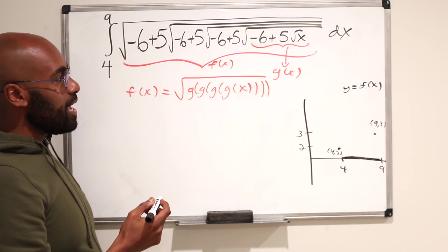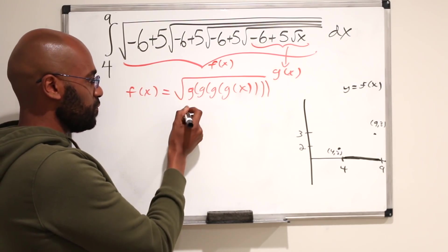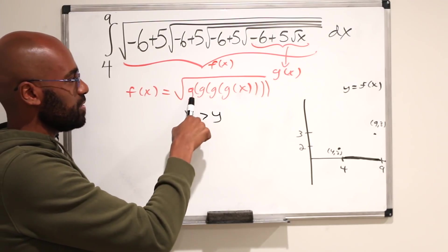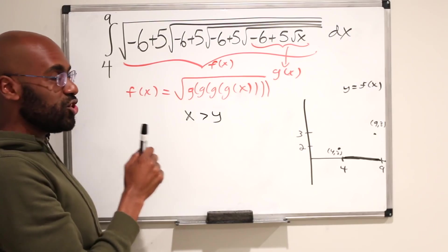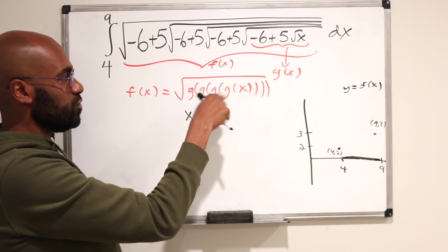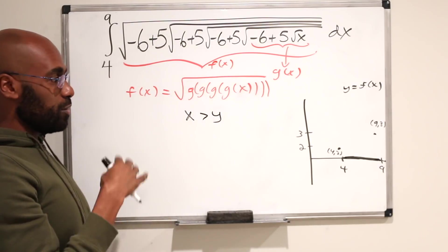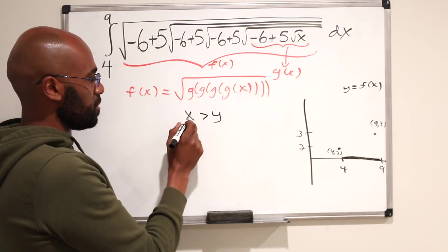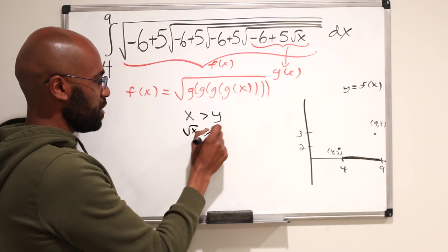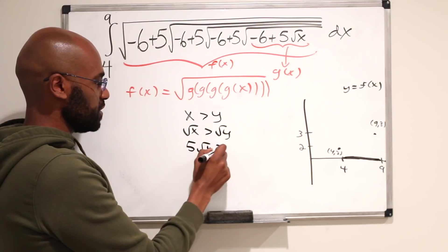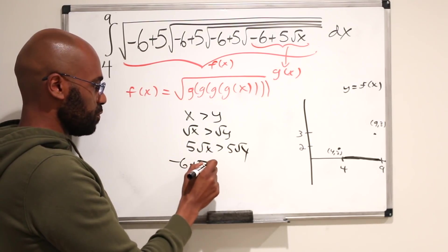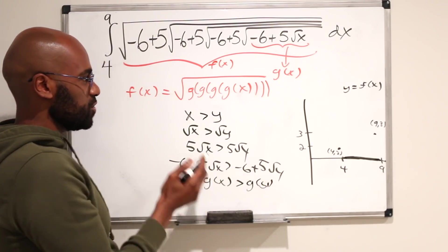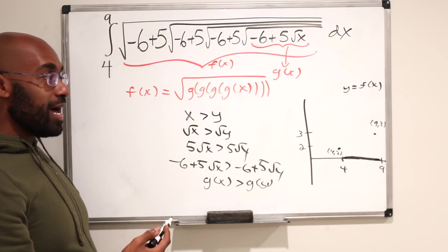Another observation is that f is actually an increasing function — if x is greater than y, then f of x is greater than f of y. Because f is represented as a composition of g applied many times, we check that g itself is increasing. If x is greater than y, then the square root of x is greater than the square root of y. Multiplying by 5 preserves this inequality, and adding negative 6 also preserves it. So g of x is greater than g of y, meaning g is increasing. Applying this to the composition, f is also an increasing function on the entire domain from 4 to 9.